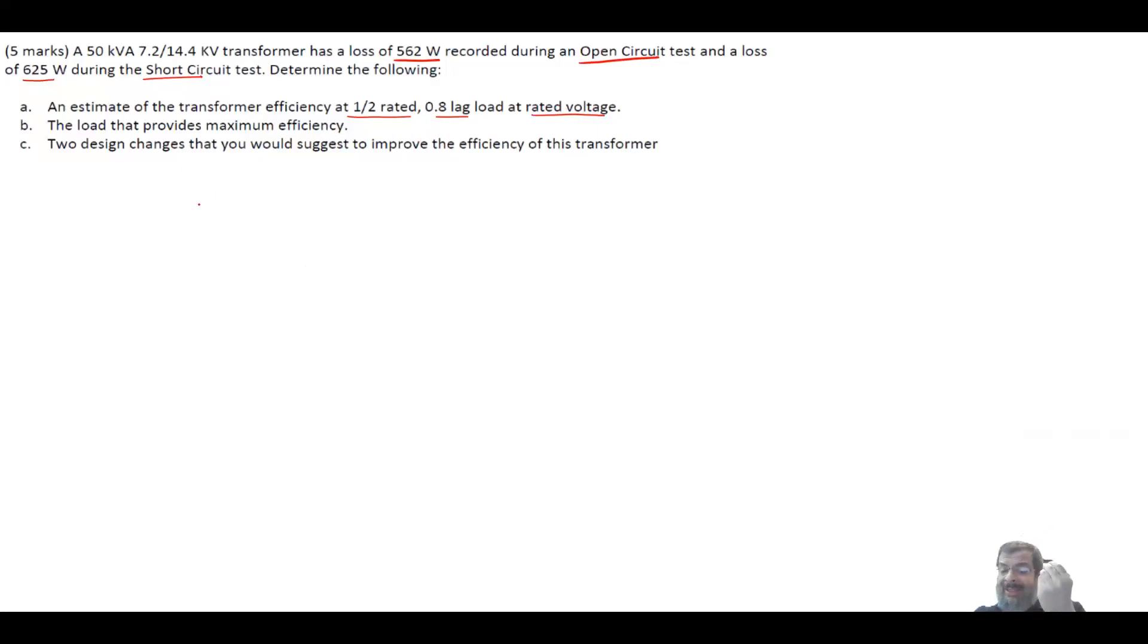Now we need to understand this question. The loss that we measured during the open circuit test, Poc, is basically the core loss. This is the core loss in the transformer and it is 562 Watt. The power from the short circuit test is basically your copper loss or the winding loss, which is equal to 625 Watt. This loss is a function of the voltage. This loss is a function of the current, and it's basically equal to I squared R.